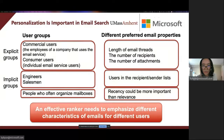For people who often organize their mailboxes, recency could be preferred compared to relevance, since they can search inside a specific folder that already satisfies some filtering conditions. So an effective ranker needs to identify diversified user groups and conduct personalized ranking accordingly.